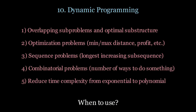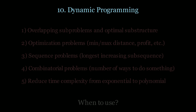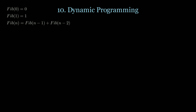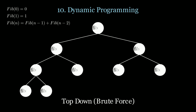Also use DP for combinatorial problems such as finding the number of ways to do something, and finally when you want to reduce time complexity from exponential to polynomial. Taking the famous Fibonacci sequence, we start with a top-down approach. To solve Fibonacci of 4, we need to solve Fibonacci of 3, 2, 1, and 0 — so we go all the way down recursively.